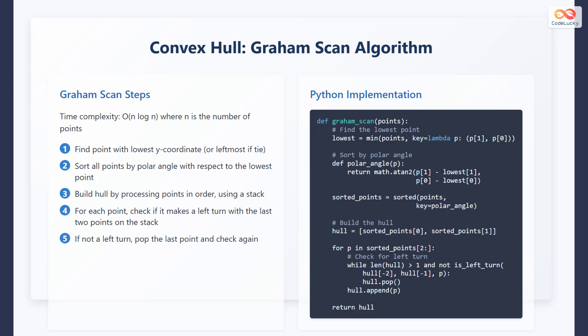On the right side, we can see a Python implementation of this algorithm. First, the function finds the lowest point, and then sorts all the points by polar angle with respect to the lowest point. After that, it builds the hull by checking for left turns and popping points until all the points in the convex hull are determined.